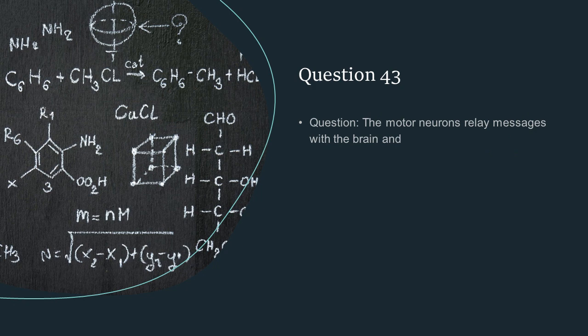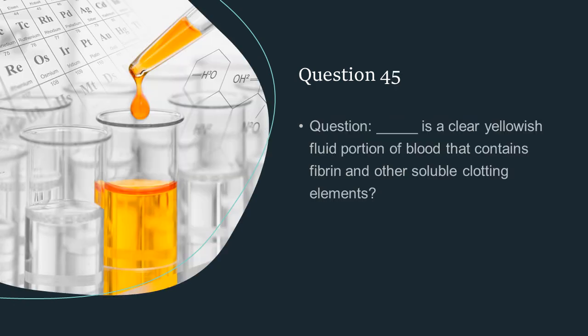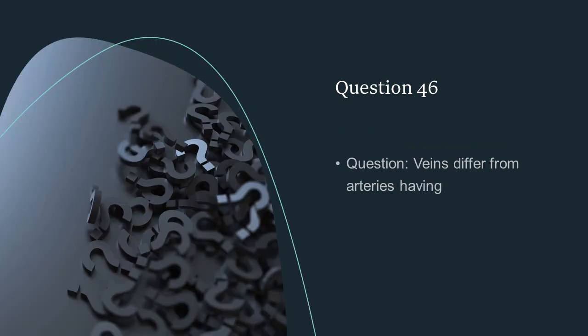The motor neurons relay messages with the brain and effectors. Gigantism and dwarfism are caused by the following hormone: GH. Plasma is a clear yellowish fluid portion of blood that contains fibrin and other soluble clotting elements. Veins differ from arteries having collapsible walls.